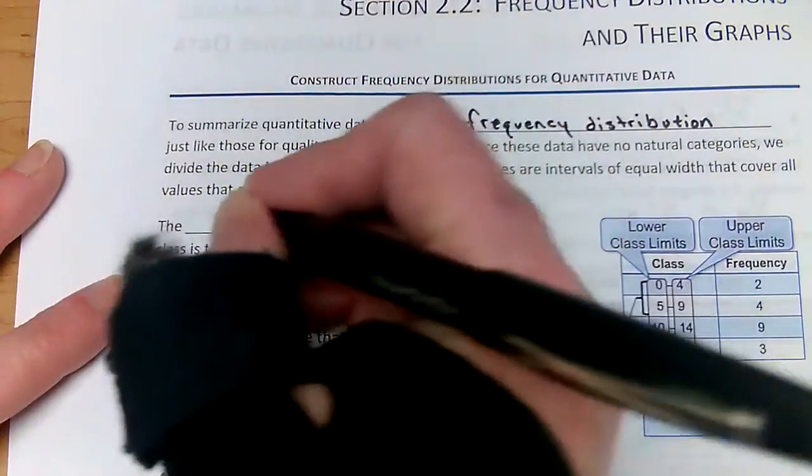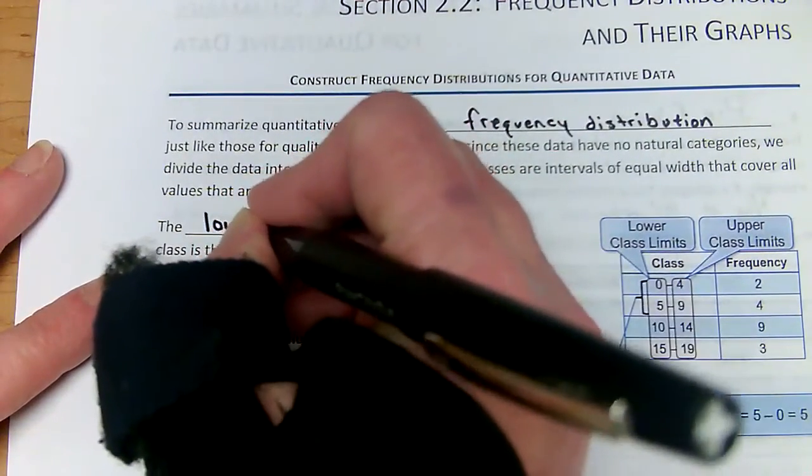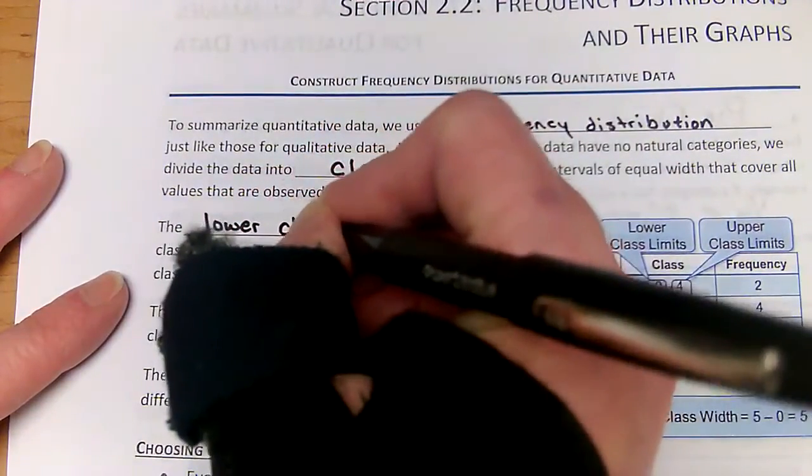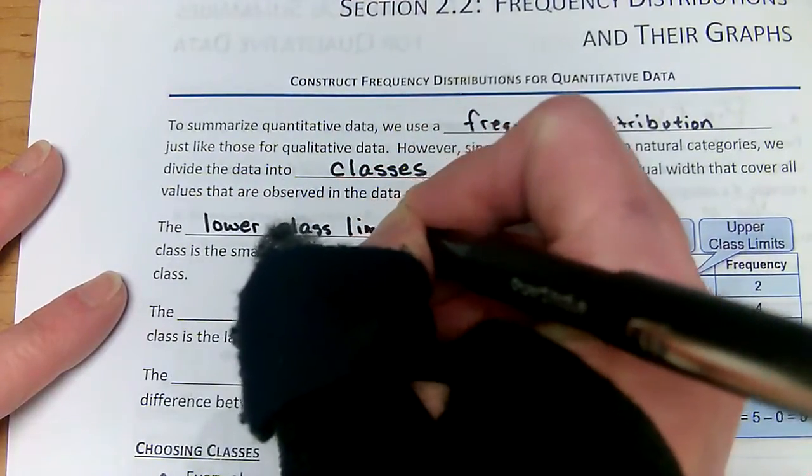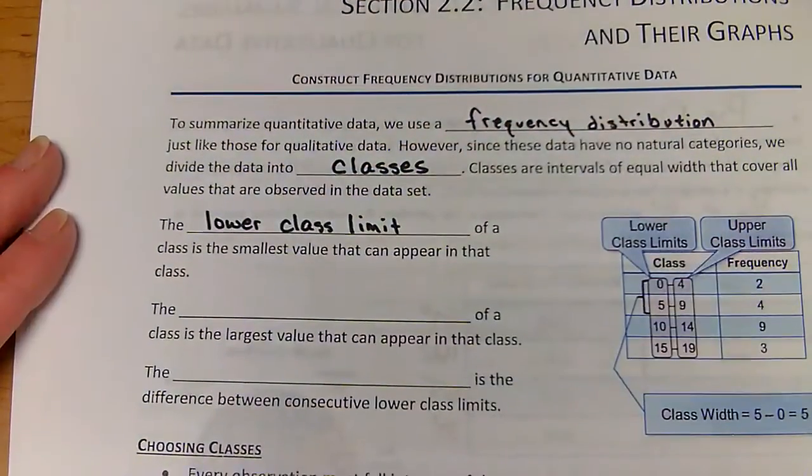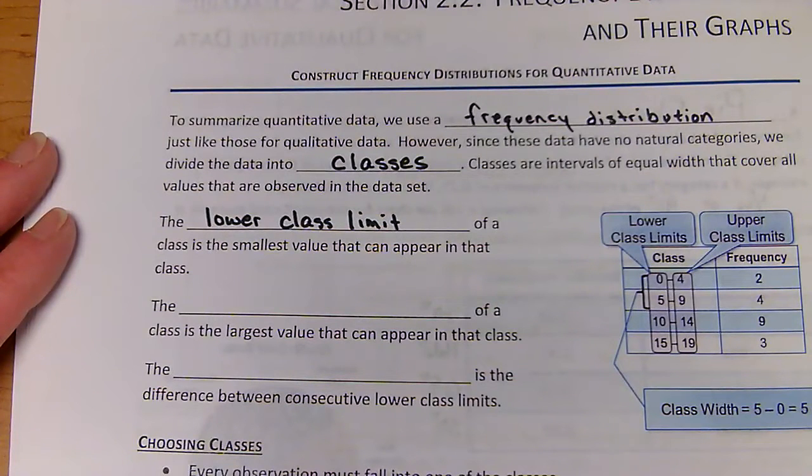The lower class limit of a class is the smallest value that can appear in that class.